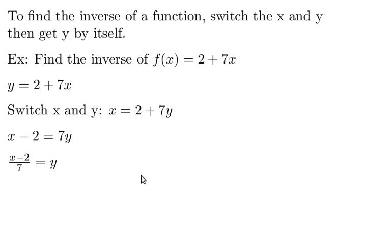Now we've gotten y by itself, so we have the inverse of f(x). So we can go ahead and write this as f inverse of x equals (x - 2)/7. That was easy enough. We just switched out x and y and then solved for y. So let's go on to another example.